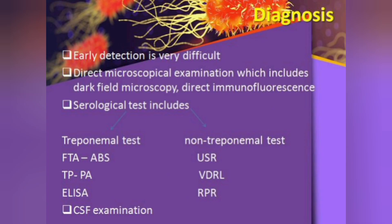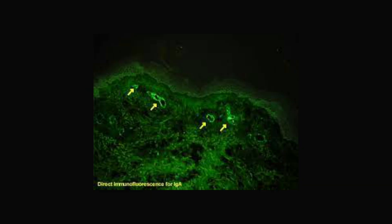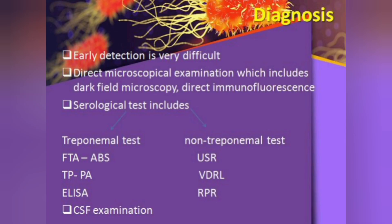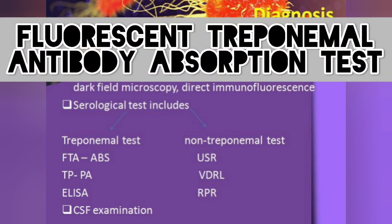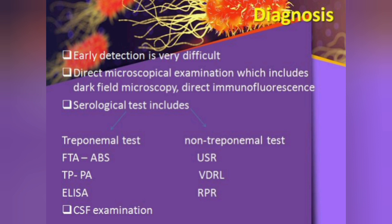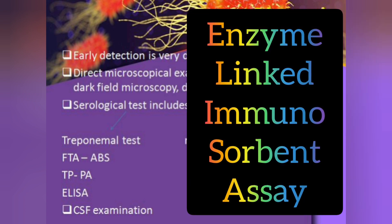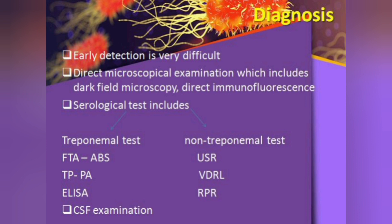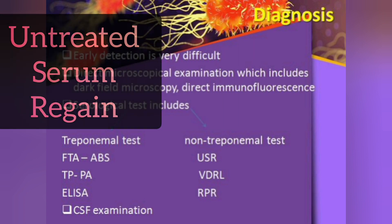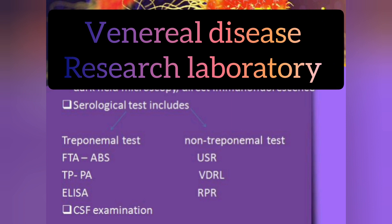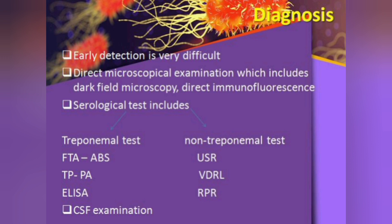Regarding diagnosis: early diagnosis is very difficult in syphilis. Direct microscopic examination methods include dark field microscopy or direct immunofluorescence. Serological tests include treponemal tests — FTA-ABS (Fluorescent Treponemal Antibody Absorption Test), TPPA (Treponema Pallidum Particle Agglutination Test), and ELISA (Enzyme-Linked Immunosorbent Assay) — plus CSF (cerebrospinal fluid) examination. Non-treponemal tests include USR (Untreated Serum Reagin), VDRL (Venereal Disease Research Laboratory), and RPR (Rapid Plasma Reagin). Using these tests, you can serologically identify the presence of syphilis.